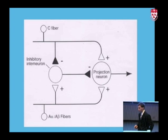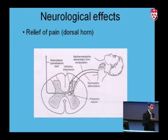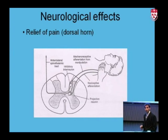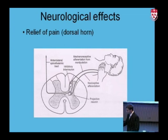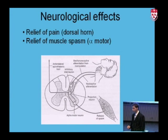In more clinical terms, the mechanoreceptive afferentation from the adjustment enters the dorsal horn causing disynaptic inhibition, as seen in gate control theory, inhibiting nociception from the area. The inhibition of nociception results in relief of pain higher up. Secondly, when a patient has pain they typically have muscle spasm — a reflexive response to protect the area. The same afferent barrage from the C fibers has a monosynaptic effect on the alpha motor neuron causing muscle spasm, and in the same way an adjustment can inhibit nociception and pain, it also inhibits the production of muscle spasm.